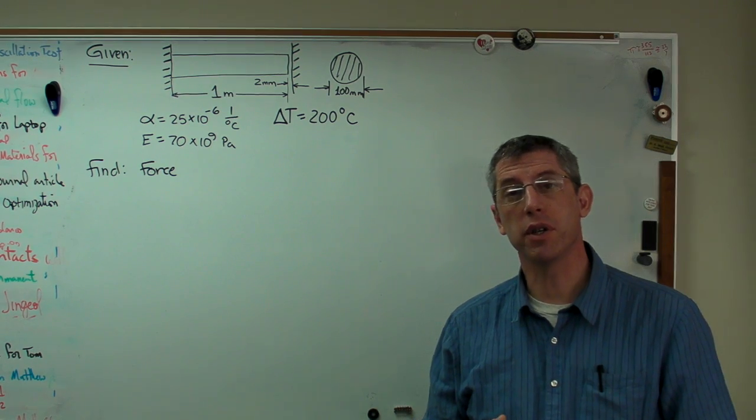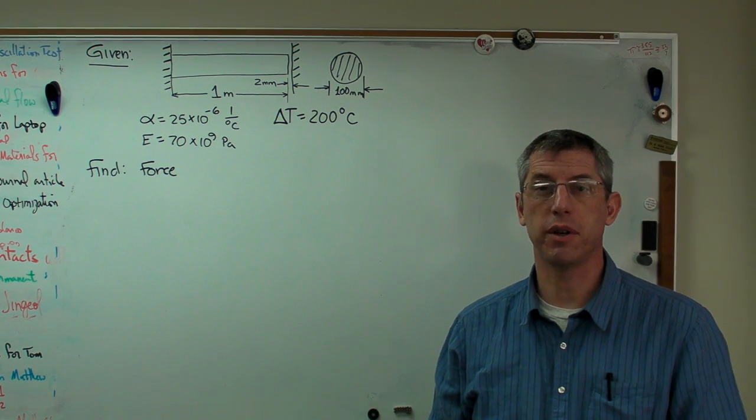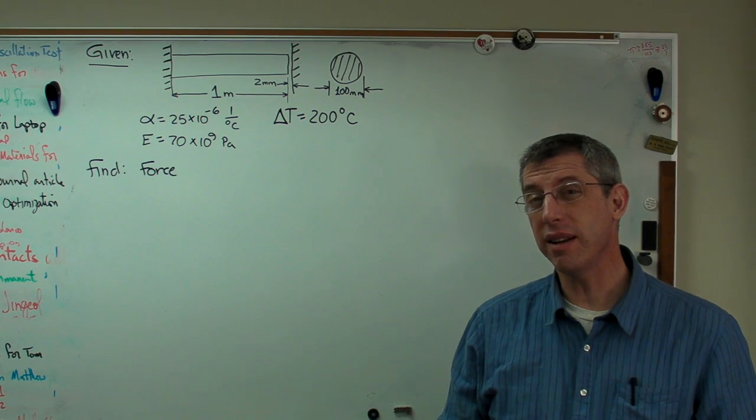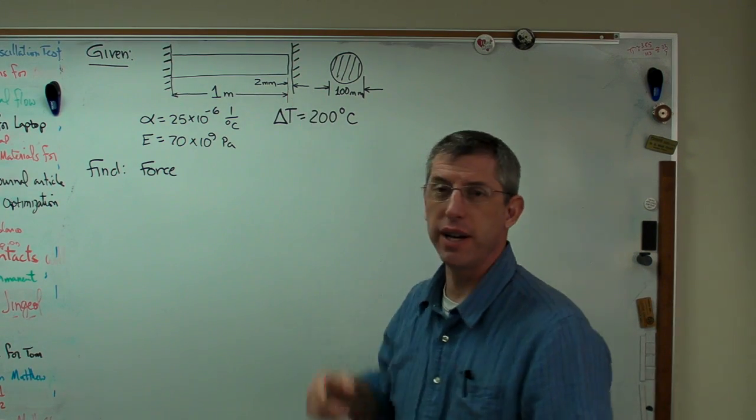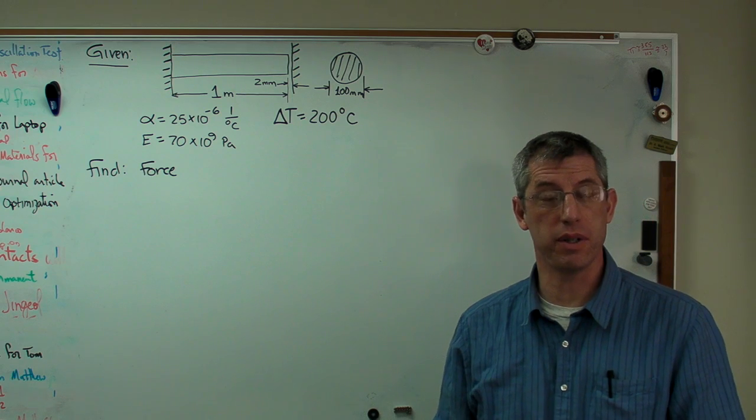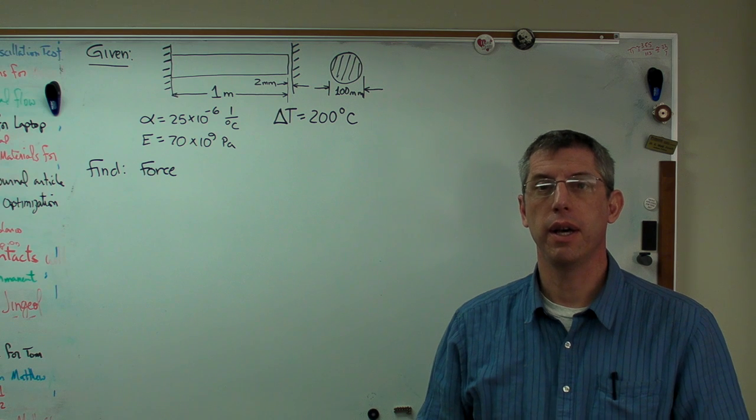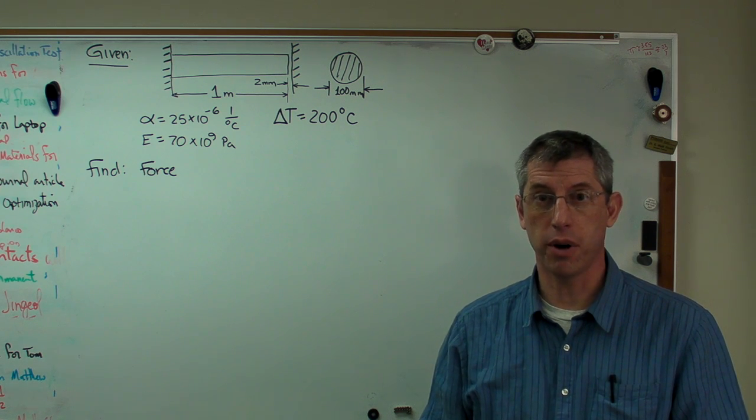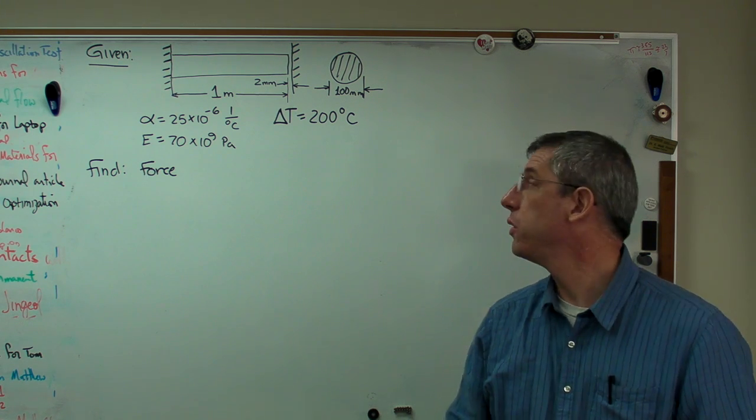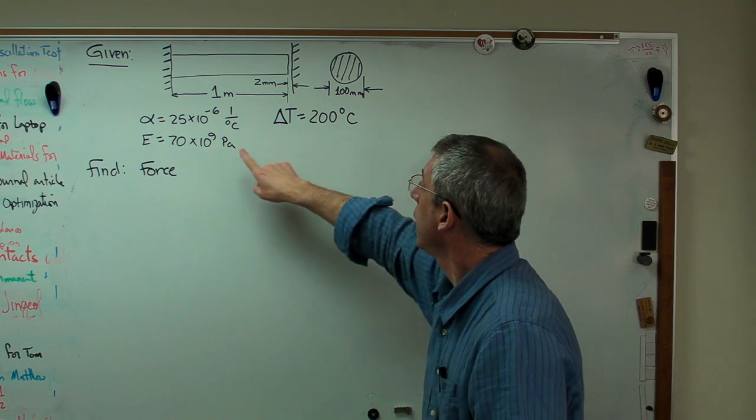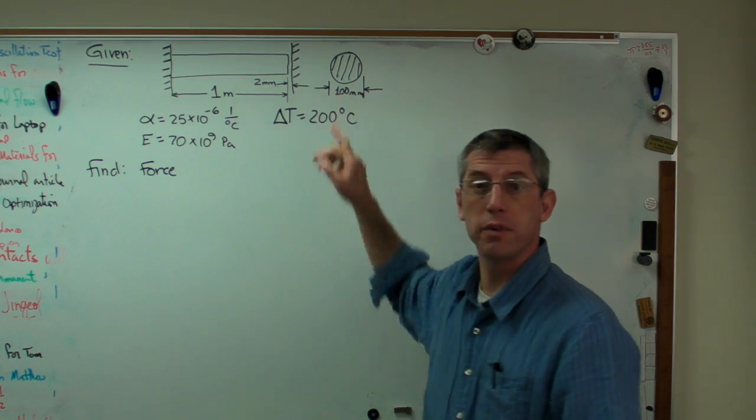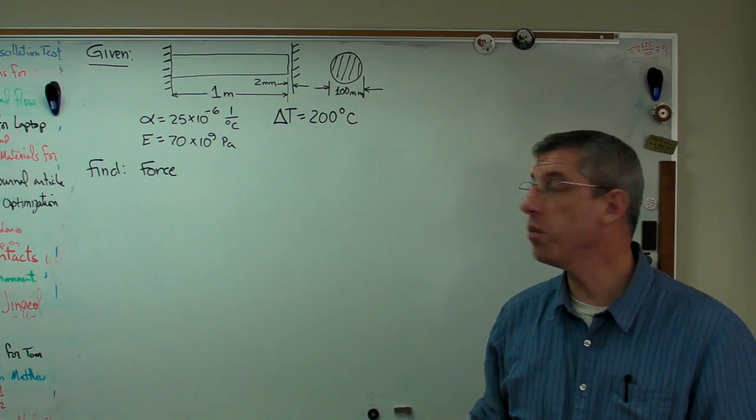This problem is going to go like a lot of other problems in strength and materials. We've really got a problem we don't know how to solve here. I don't know how to deal with a two millimeter gap in one step. What I do know how to do is to break the problem into two parts and then combine those two parts to get the final answer. So the two parts I'm going to use are, I'm going to figure out how far this bar would expand if there was no barrier.